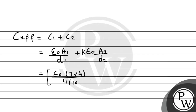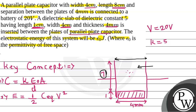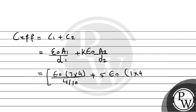So d1 becomes 4 by 10. Then, for the dielectric section, we have 5 times epsilon-naught times A2 divided by d2. The area A2 has length 1 cm and width 4 cm, so A2 equals 1 multiplied by 4 centimeters squared. The distance d2 is also 4 by 10 centimeters, which equals 4 times 10 to the power minus 2 meters after conversion.